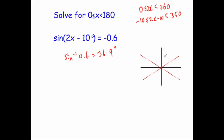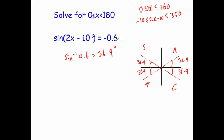So that means that all the angles between the x-axis and the lines are 36.9 degrees — 36.9, 36.9, and 36.9. So we've got all our angles, and now we just need to consider which options we're going to choose.